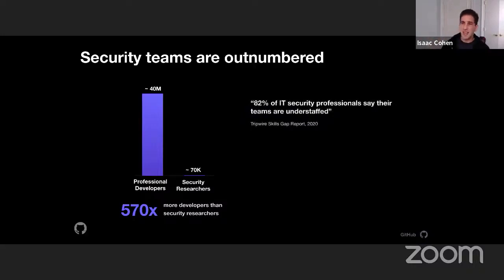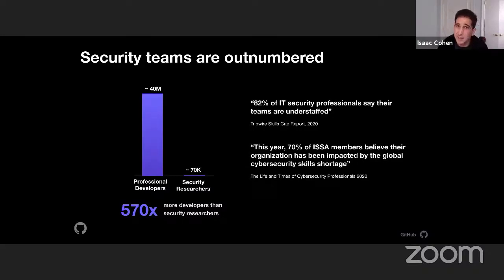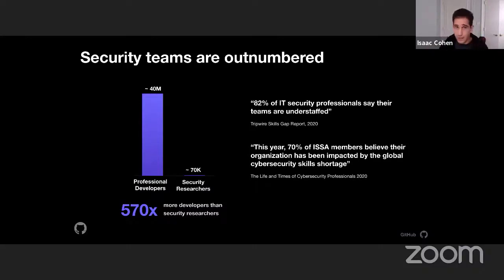Security teams are vastly outnumbered. 82% of security IT professionals say teams are understaffed. 70% report a cybersecurity skills shortage. What we see in security today is a zero-sum game — there's just not enough security researchers. So we need to figure out a way to scale this through automation, because they are just vastly outnumbered for the amount of developers that are out there.